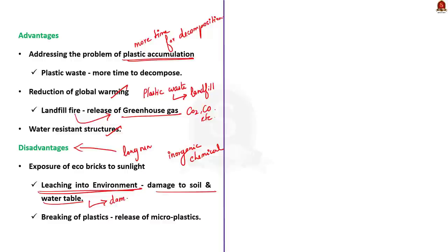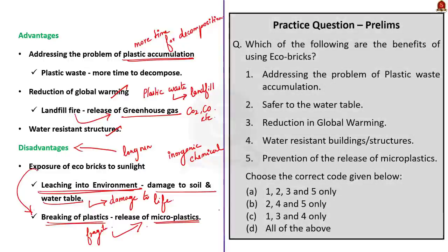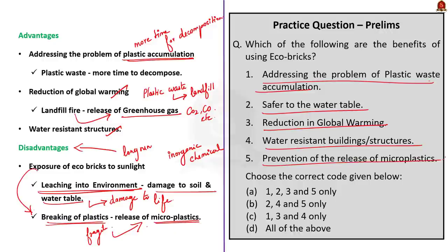Exposure to sunlight also makes eco-bricks fragile and vulnerable to breakage, releasing microplastics that are harmful to animal and human health. So eco-bricks are not safer to the water table and do not prevent the release of microplastics. From the question's five stated benefits — addressing plastic waste accumulation, safer to water table, reduction in global warming, water resistant buildings, and prevention of microplastic release — statements 1, 3, and 4 are correct while 2 and 5 are incorrect. The correct answer is option C — 1, 3 and 4 only.